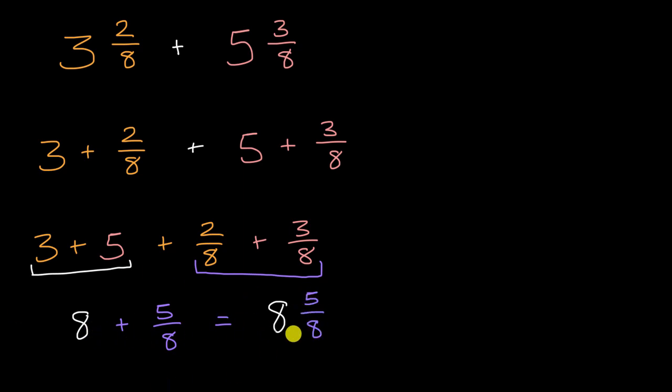Now there's other ways that you might see folks approaching this. You might see something like this, where people will write three plus two-eighths, and then they will write right below that, the five in the ones place, or in the whole number. So you'd write the five right below the three, and then plus, and then the fraction you'd write right below the fraction, three-eighths.